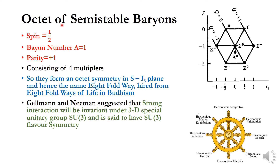A similar structure was obtained for the baryons — the octet of semi-stable baryons. The members are the nucleon doublet, the Xi doublets, the Sigma triplet, and the singlet Λ⁰. All members have spin equal to one-half, baryon number A equal to one, and parity equal to plus one. This supermultiplet consists of four multiplets forming an octet symmetry in the S-I₃ plane, hence the name Eightfold Way.